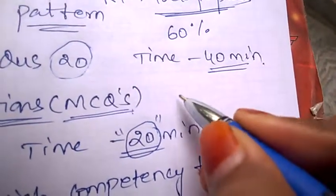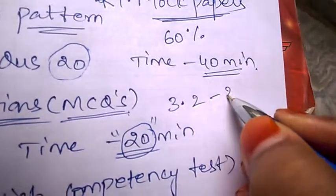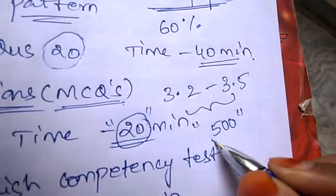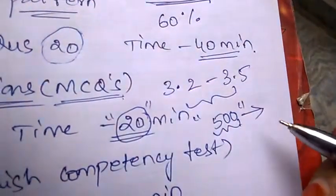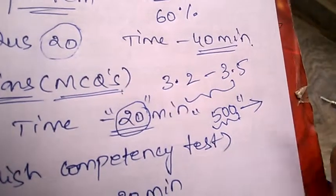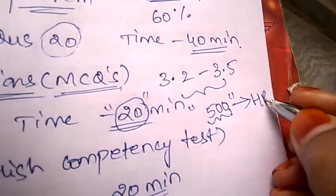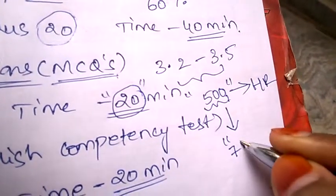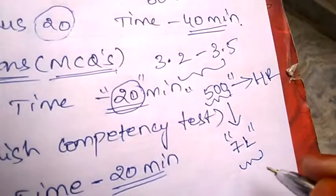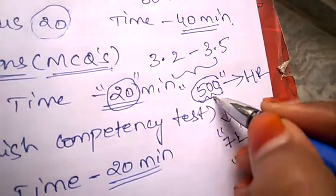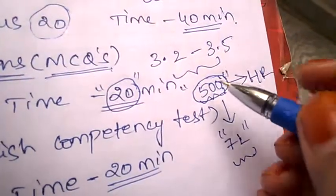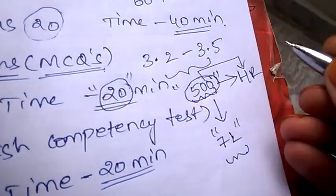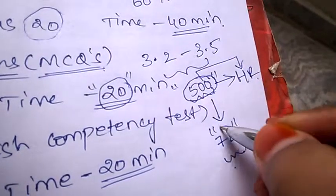Basically, the TCS Ninja package will be between 3.2 to 3.5 lakhs. The top 500 people who got selected in TCS Ninja will be directly promoted to the HR round, and if they are really talented, they can take the package up to 7 lakhs. This is the special offer only for the top 500 ranks. If you are in those 500, you are the luckiest person.